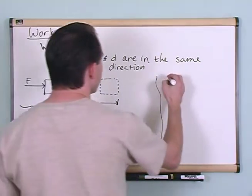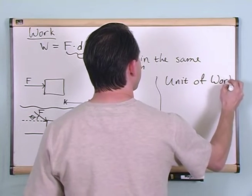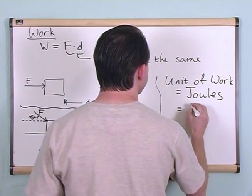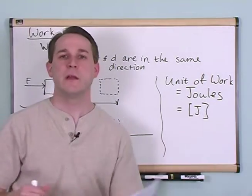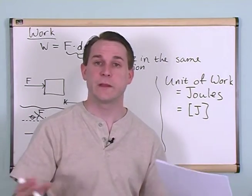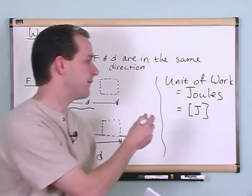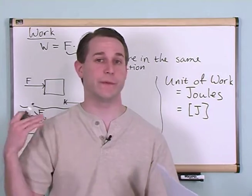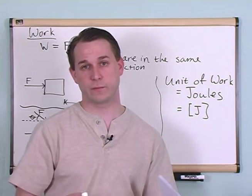The unit of work is joules, written as the symbol J. We deal with meters, seconds, kilograms, meters per second, meters per second squared, and then we have the unit of work, which is joules. That's another fundamental unit in physics that you're going to deal with over and over again, popping up again and again in other topics.